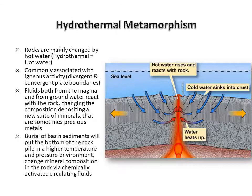When hydrothermal metamorphism takes place, rocks are mainly changed by hot water — the term hydrothermal refers to hot water. Hydrothermal metamorphism is commonly associated with igneous activity, which is in turn associated with divergent and convergent plate boundaries where magma is present. Fluids from the magma mix with groundwater and react with the rock, changing the composition and depositing a new suite of minerals, which sometimes contain precious metals. Hydrothermal metamorphism can also take place in basins where deeply buried sediments experience higher temperature and pressure, changing the mineral composition through chemically activated circulating fluids.